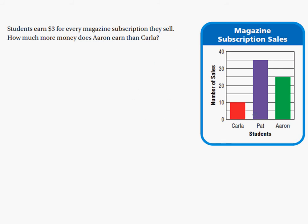Now we're going to analyze an existing bar graph. This is magazine subscription sales — Carla, Pat, and Aaron are selling magazines. Carla sold 10, Pat sold 35, and Aaron sold 25. Students earn $3 for every magazine subscription they sell. The question is: how much more money does Aaron earn than Carla?